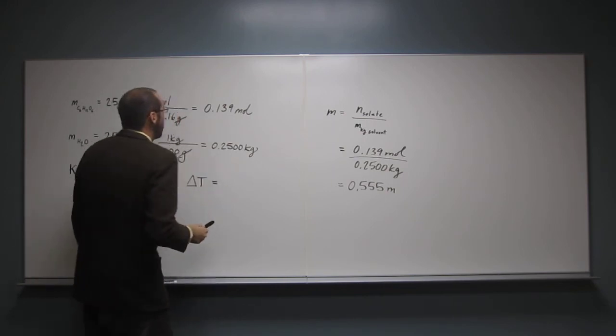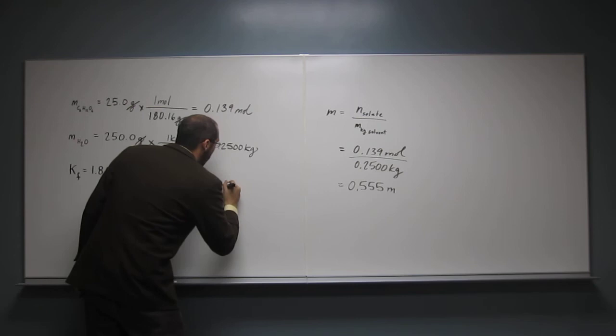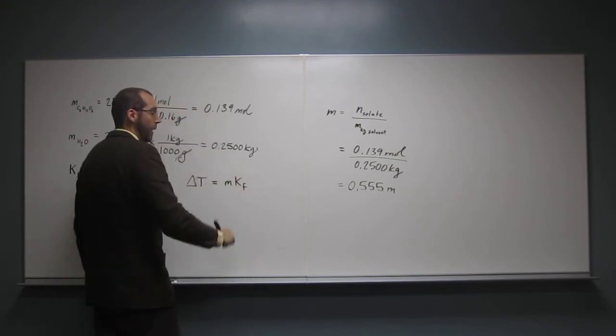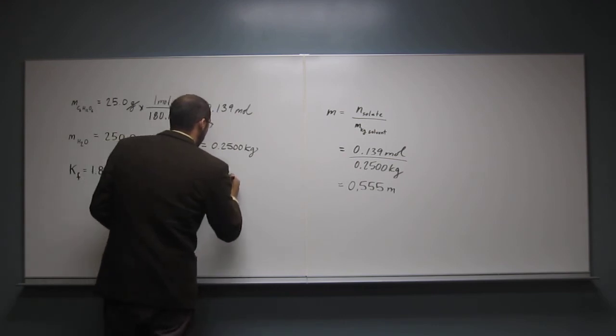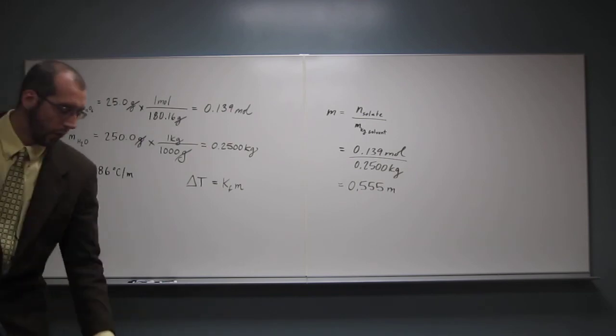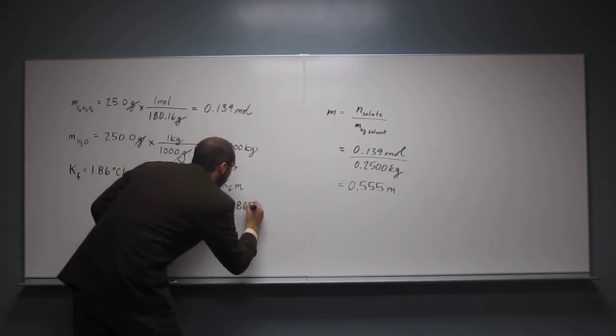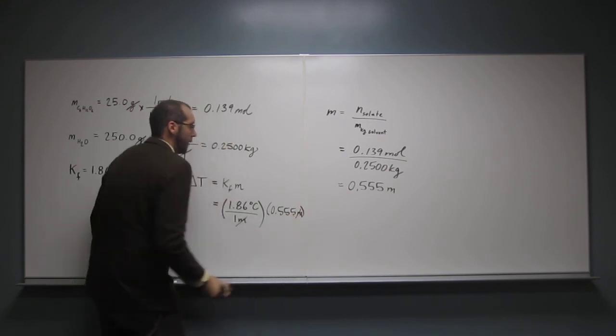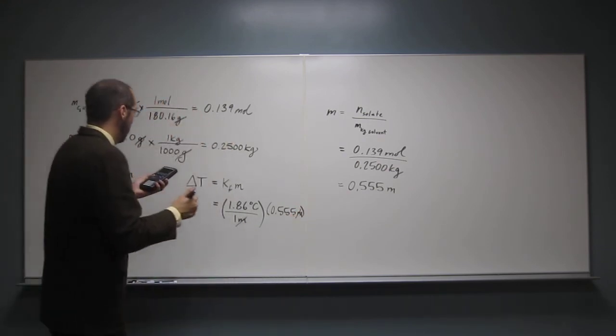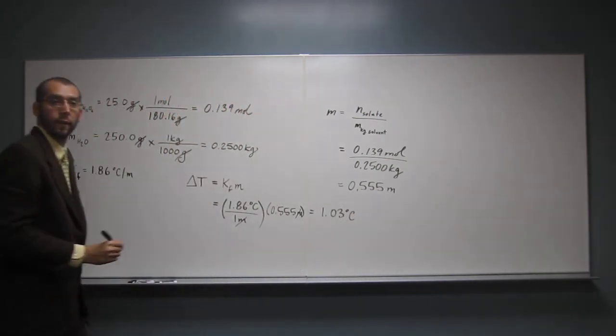Well, fructose doesn't break up into ions, so it's just going to be, in this case, M times the Kf, or Kf times M. So we get 1.86 degrees C divided by 1 M times 0.555 M. Cancel, cancel, cancel. So what's it going to lower it? 1.03 degrees C.